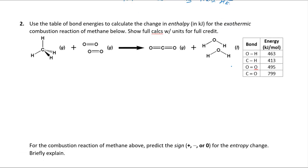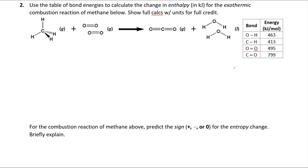This next question deals with one of the many ways we've learned to calculate enthalpy. We're looking at the combustion of methane — methane has four C-H bonds, and we're reacting with two molecules of O₂ (two O=O bonds). This is a combustion reaction. We form one CO₂, which has two C=O double bonds, and two moles of water, which has four O-H bonds. We can think of the reactant bonds as being broken.